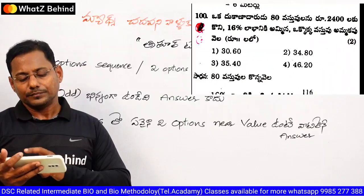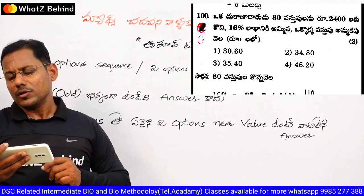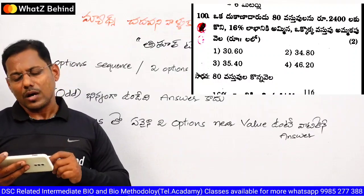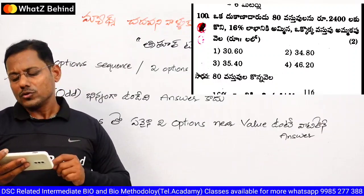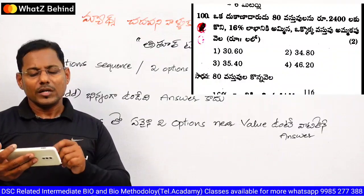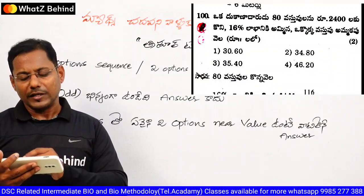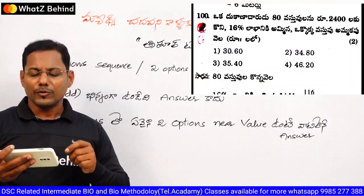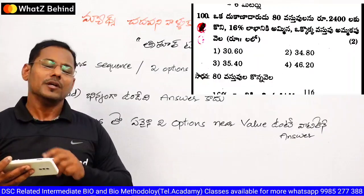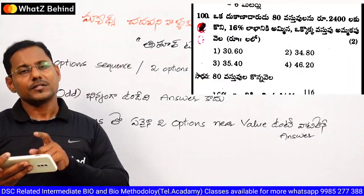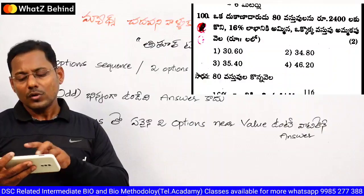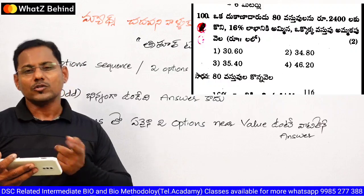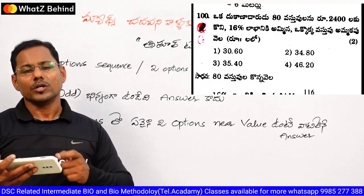Looking at one more example with options: 30.60, 34.80, 35.40, and 46.20. We can see that the second and third options have nearby values — 34.80 and 35.40 are similar. The answer is option 2, answer C. The second option is the answer. When nearby values appear in the same options group, that group contains the answer. Answer sequence: 2, 4, 4, 2, 3, 1, 3 — answer is C.